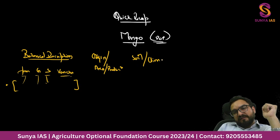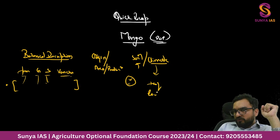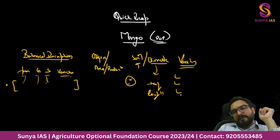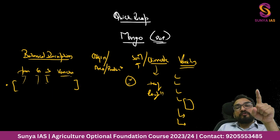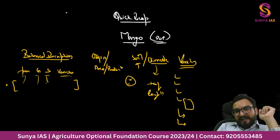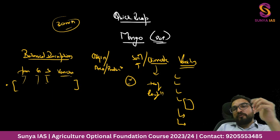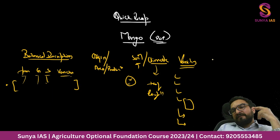Soil and climate should be known - the soil is loamy alluvial, and you should know which soil is not suitable for mango cultivation. For climate, you should know the temperature and rainfall, as examiners look for exact details. We covered different varieties like Chausa, Dashari, Amrapali, hybrid varieties, and the Andhra Pradesh variety. Alfonso is used for export and is susceptible to a particular disease.